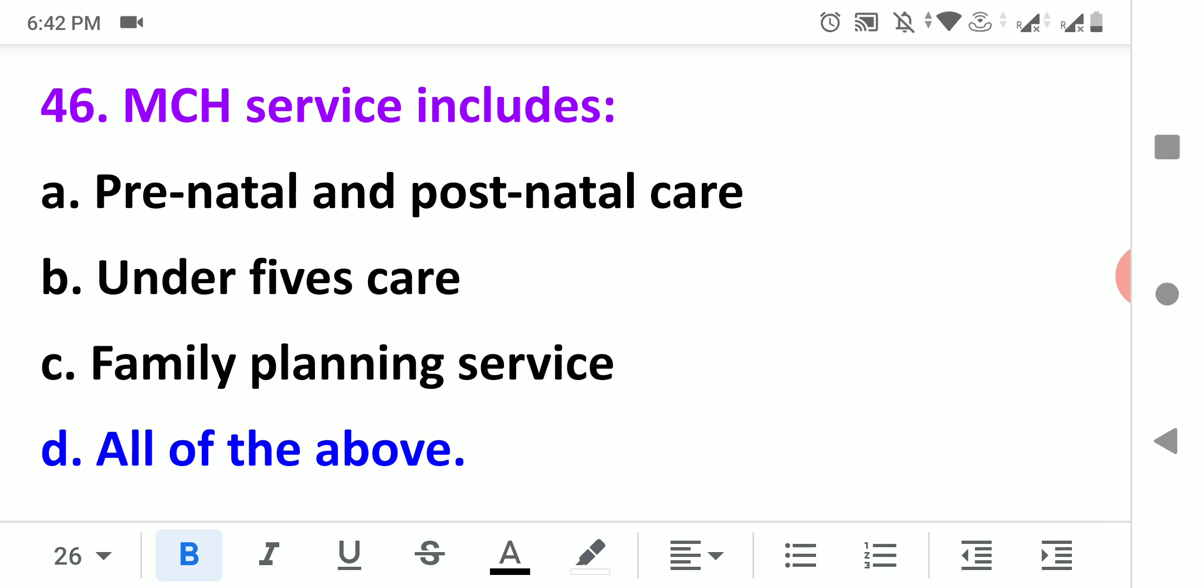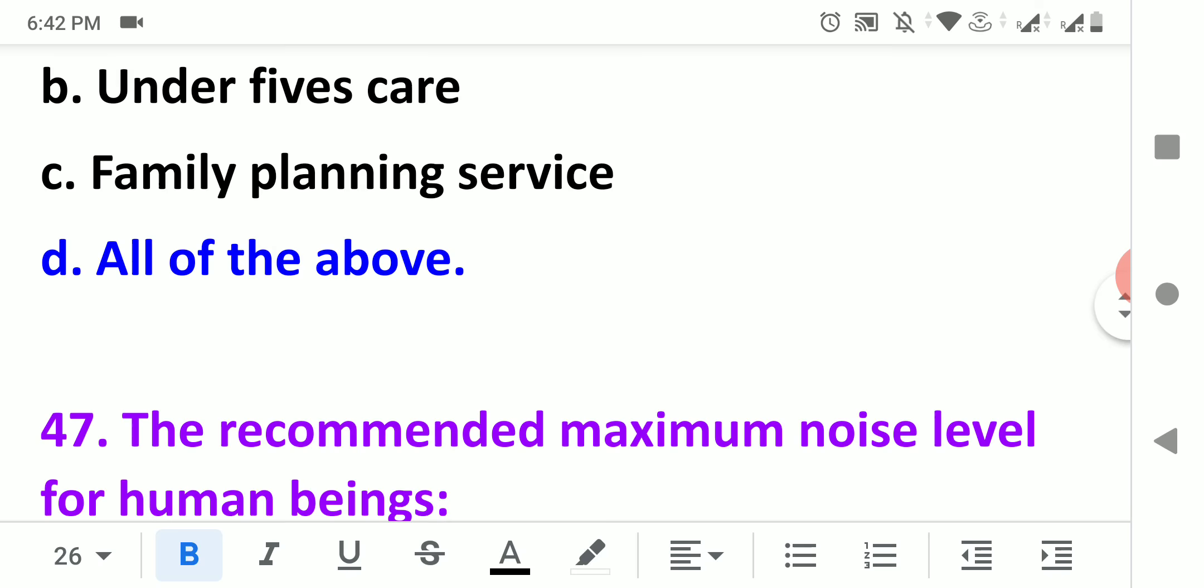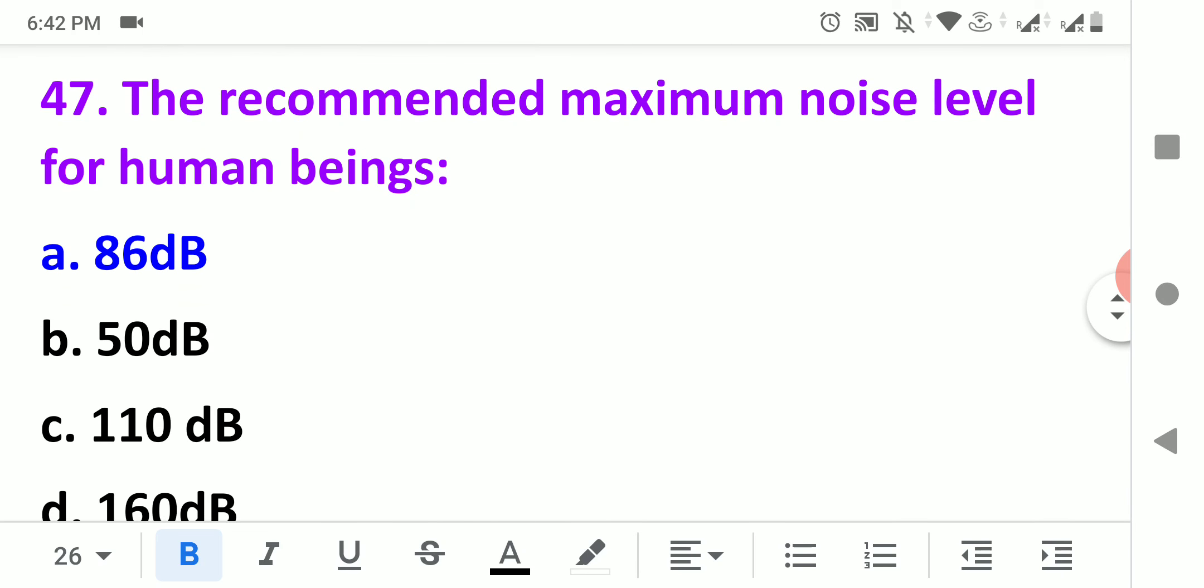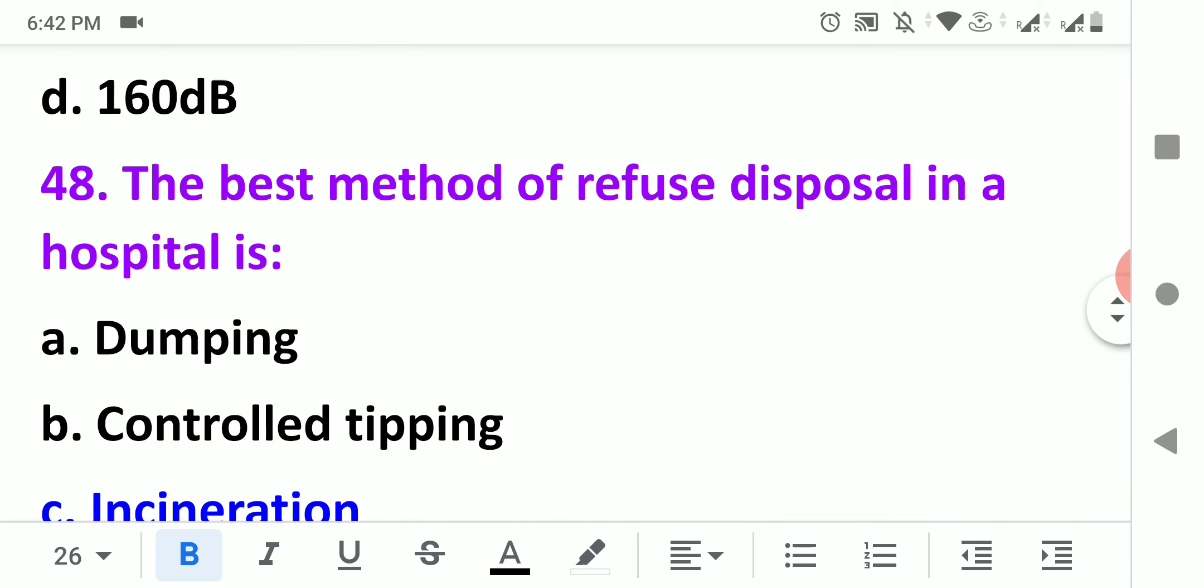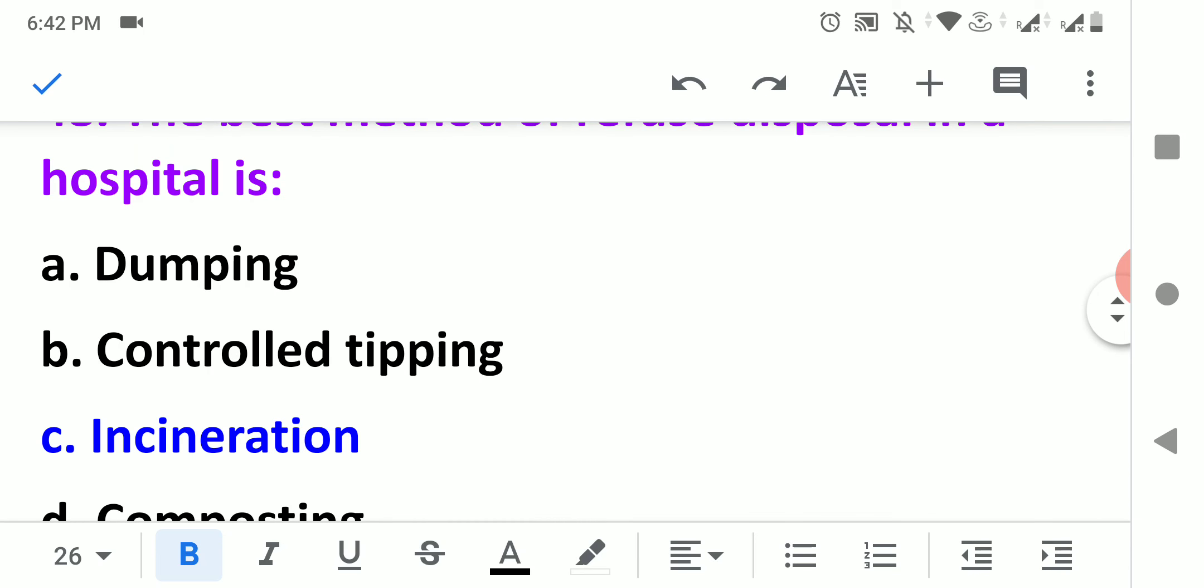MCH services include maternal and child health services: prenatal and postnatal care, under-five care, family planning services. So all of the above is right. The recommended maximum noise volume for human beings is 86 decibels. It shouldn't cross this 86 decibels, otherwise it may cause impairment to the ears.